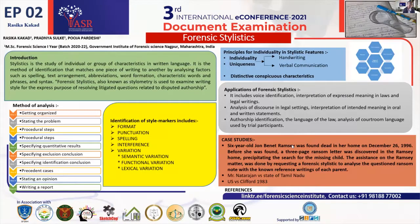The next step is specifying the exclusion conclusion. In this step, we compare both samples and find out the dissimilarities between them. This allows us to exclude a number of writers and focus only on the writer whose characteristics match the questioned document. The next step is the identification of conclusion, where we identify all types of style markers.